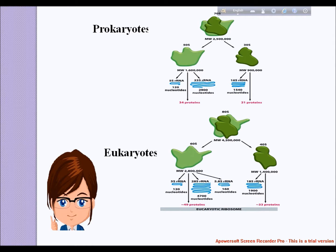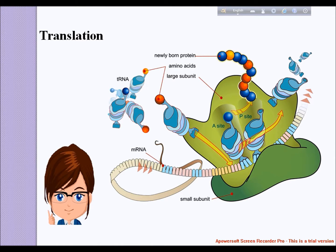Now, turning to translation: how does translation occur by the ribosome in the presence of rRNA? Translation is the net effect of proteins being synthesized by ribosomes from a copy of mRNA of the DNA template in the nucleus. One of the components of the ribosome, the 16S rRNA, base pairs complementarily to the Shine-Dalgarno sequence upstream of the start codon in mRNA.